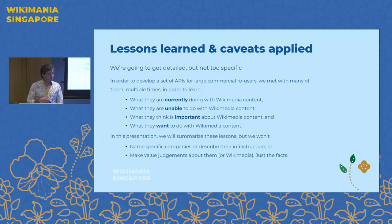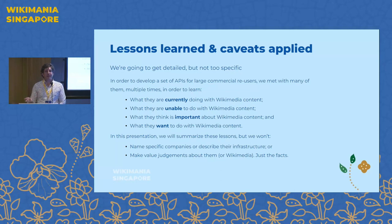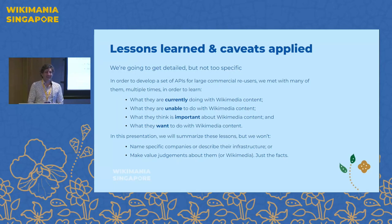We wanted to understand what they were currently doing with Wikimedia content — not just how their technical architecture worked, but once they had that content, what did they do with it? Where did they store it? What were all the services on their end that used it? What was the architecture that allowed those services to use it? A lot of that was sort of black box and inaccessible to us. We also asked what they couldn't do — their pain points, their frustrations in working with Wikimedia content. And more broadly, what was important about Wikimedia content to them? Candidly, I was asking that because I have to be a salesperson sometimes.